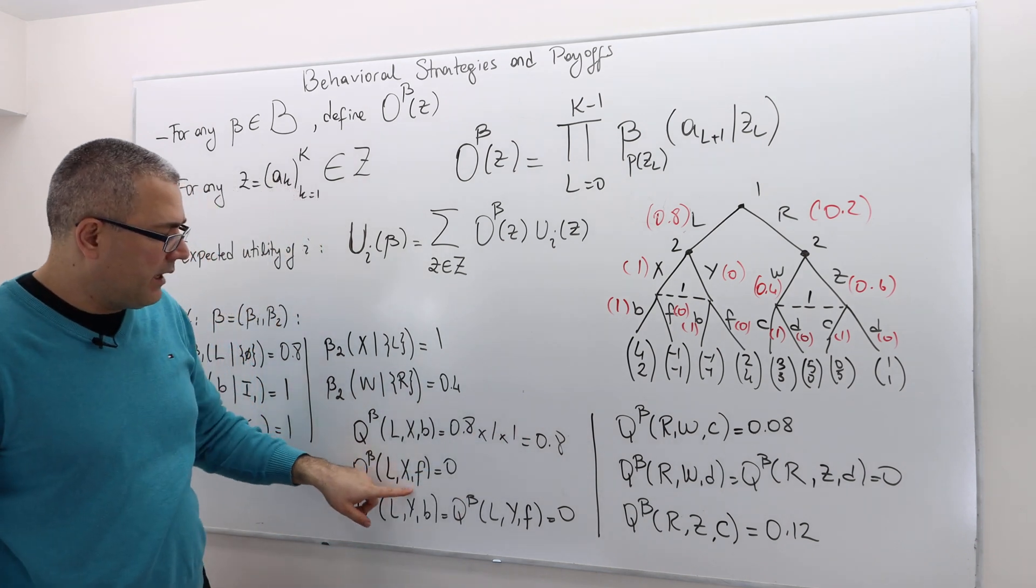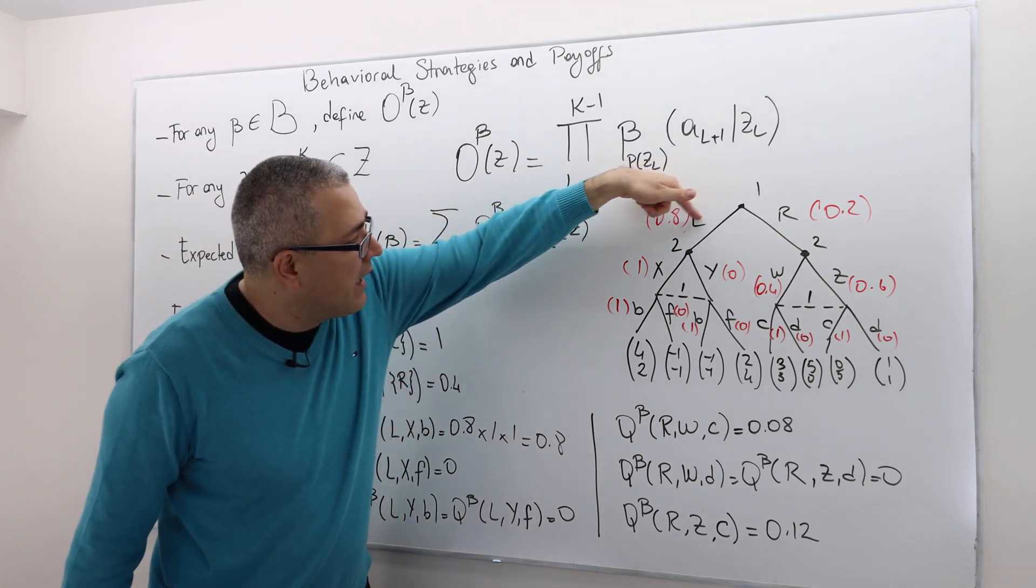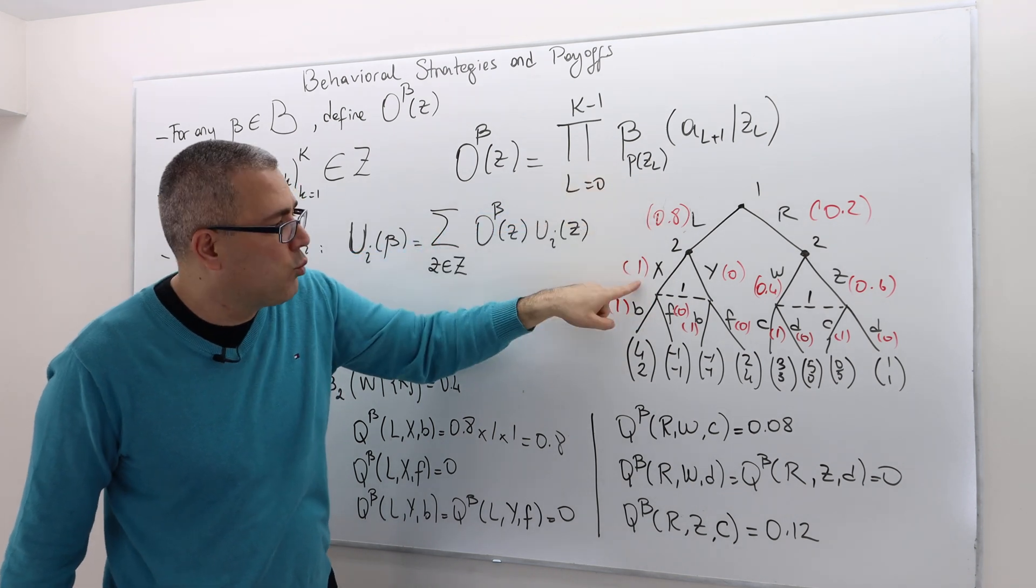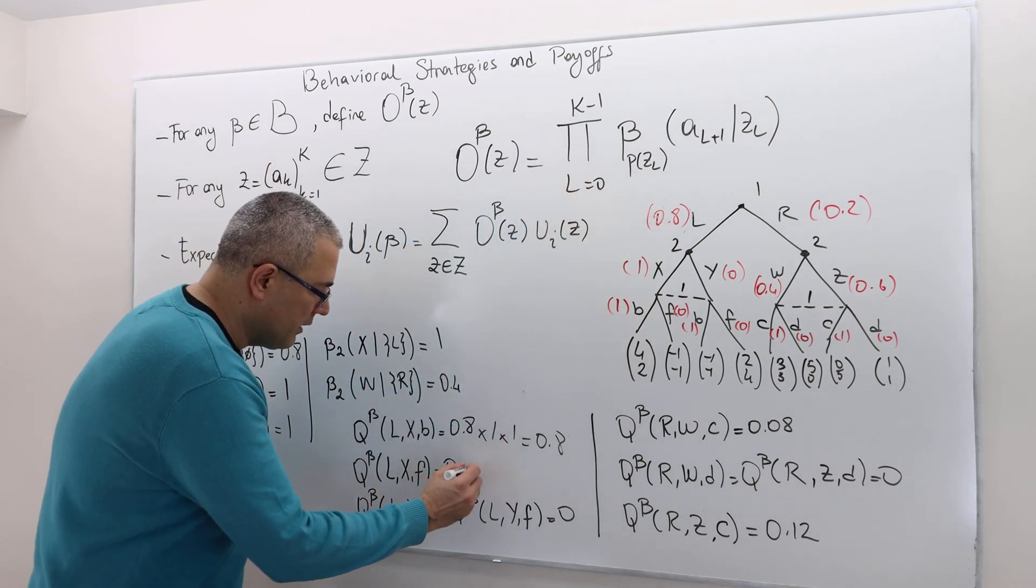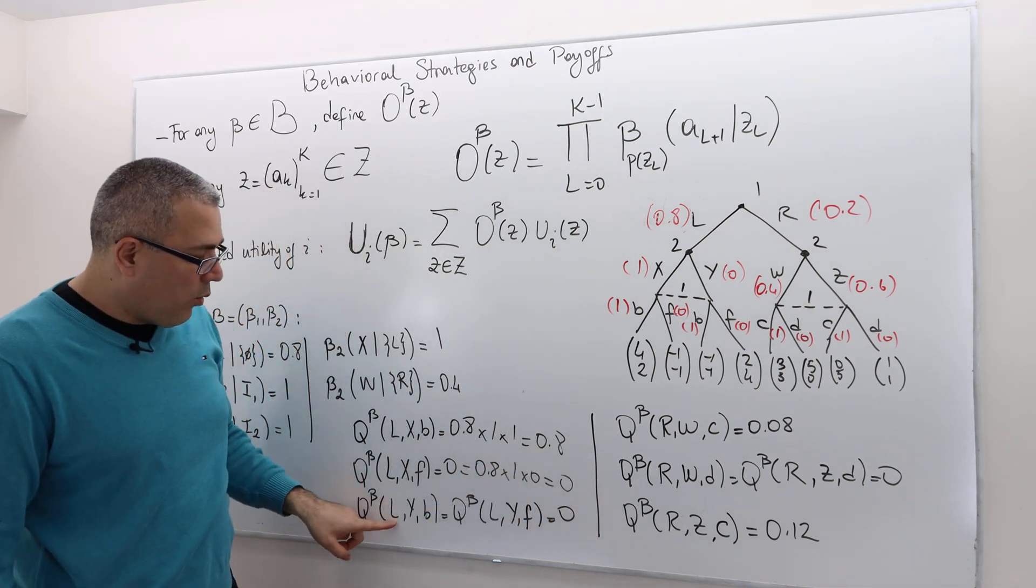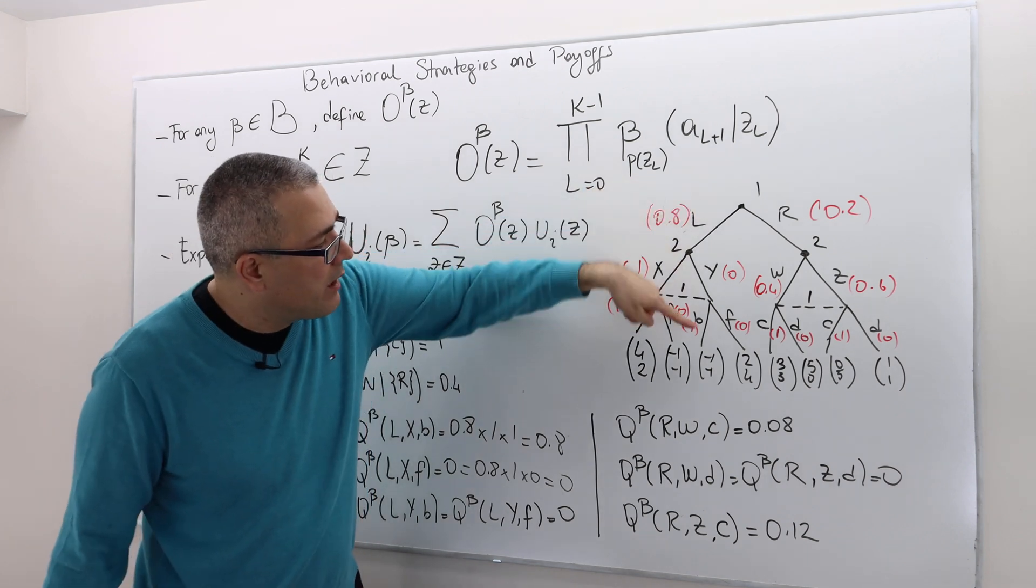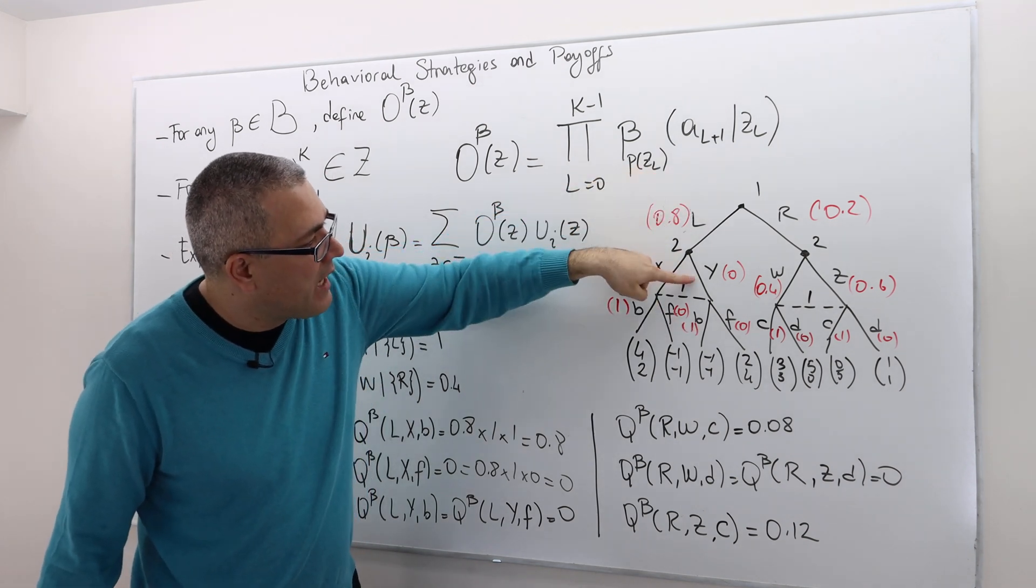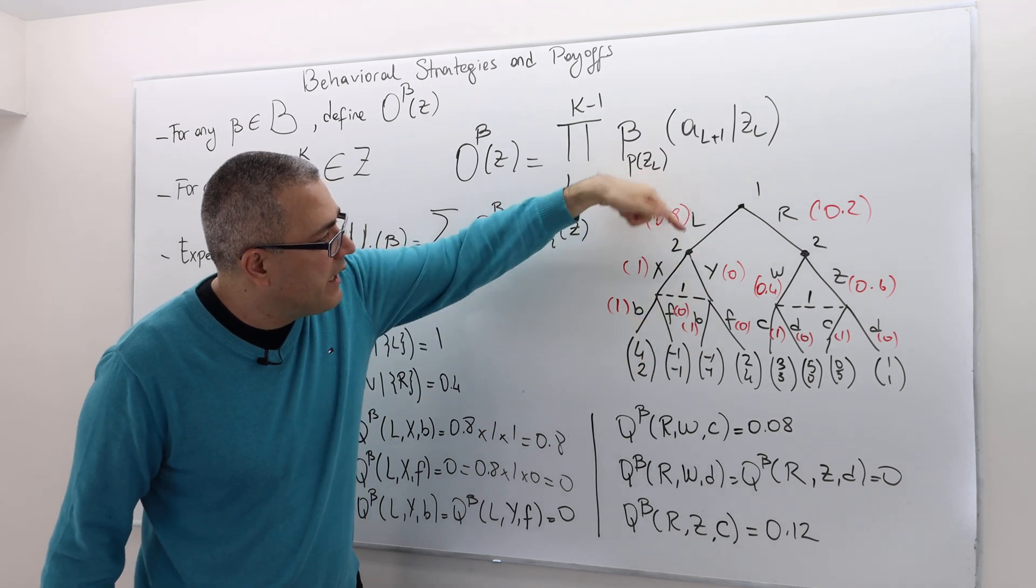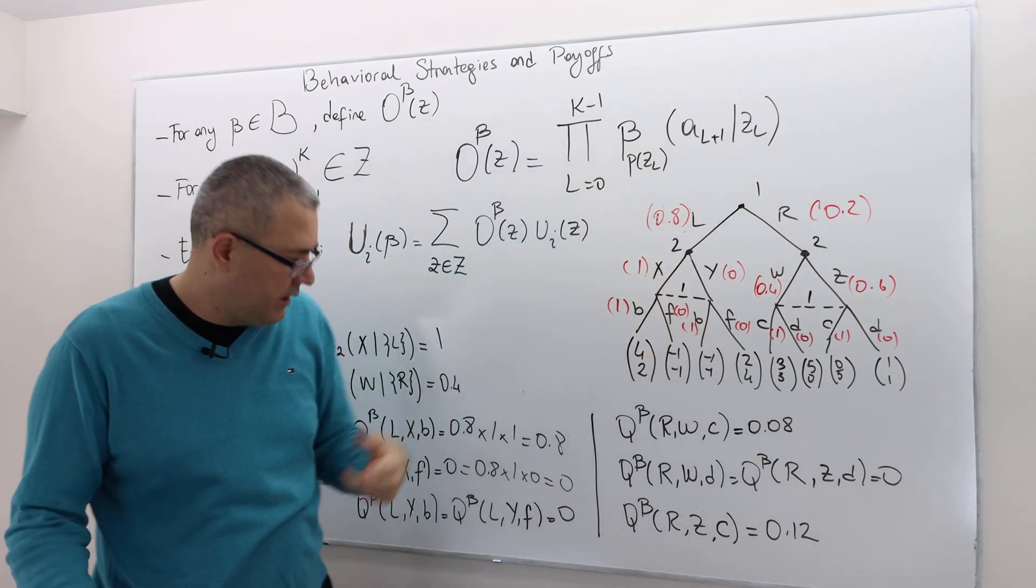What about LXF? 0.8 times 1 times 0, so it's 0. LYB: 0.8 times 0 times 1, which is 0. LYF: 0.8 times 0 times 0, which is 0.